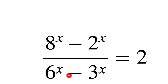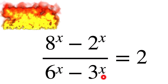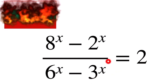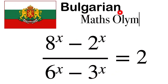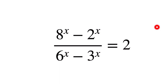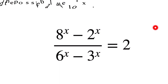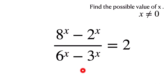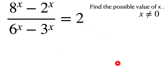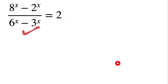Welcome back. Today we are going to solve this question, which we take from the Bulgarian Maths Olympiad. We have to find the possible value of x when x is not equal to 0. Can you solve this? If you can, then pause the video and take a try. Otherwise, let's see the solution.